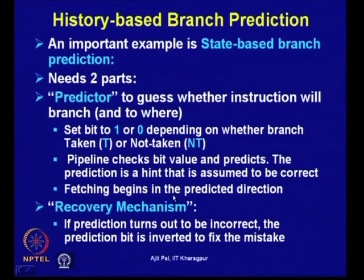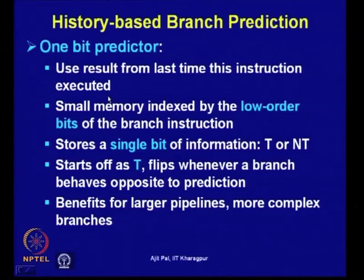Let us first focus on the simplest history-based branch prediction: using a 1-bit predictor. You use the result from the last time this instruction executed. A small memory is indexed by the low-order bits of the branch instruction address — say 4 or 8 bits are used to index a small memory where a single bit is stored: 0 corresponds to not taken and 1 corresponds to taken. You are storing 1 bit corresponding to each branch address that has been encountered.